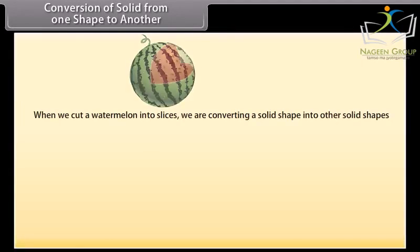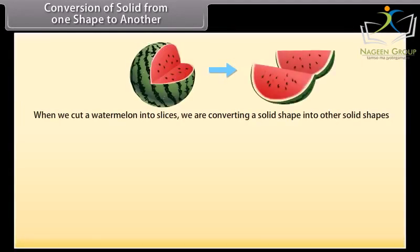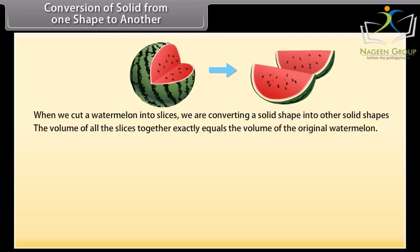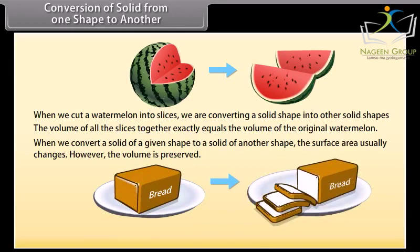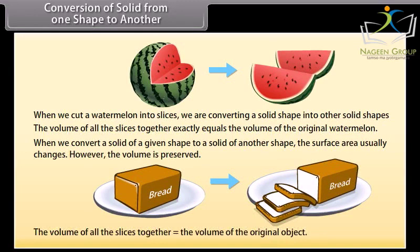Conversion of solid from one shape to another: When we cut a watermelon into slices, we are converting a solid shape into other solid shapes. Regardless of the size and shape of the slices, the volume of all the slices together exactly equals the volume of the original watermelon. When we convert a solid of a given shape to another shape, the surface area usually changes; however, the volume is preserved. Similarly, when cutting bread into slices, the total volume of slices equals the original volume.